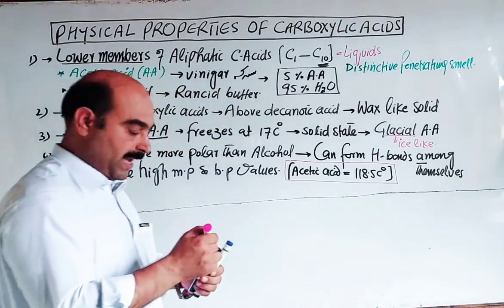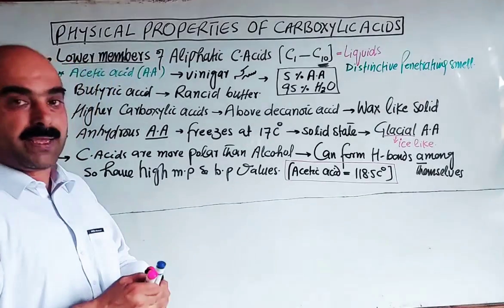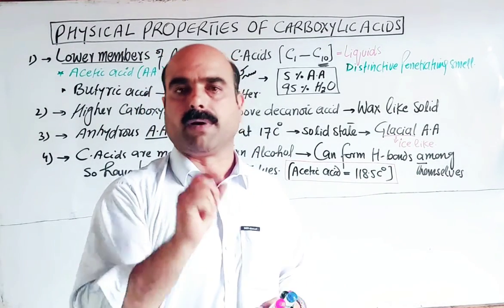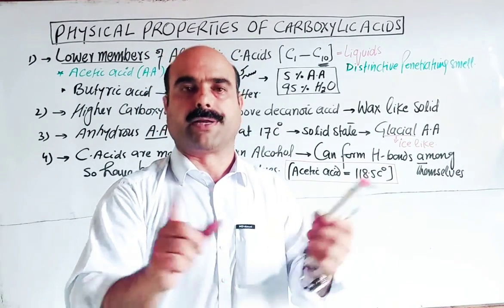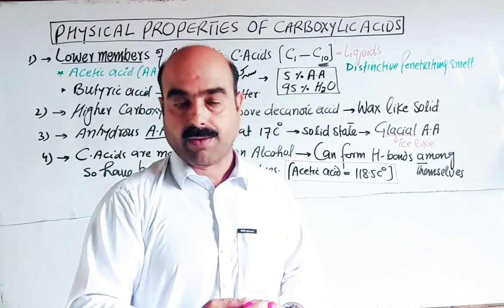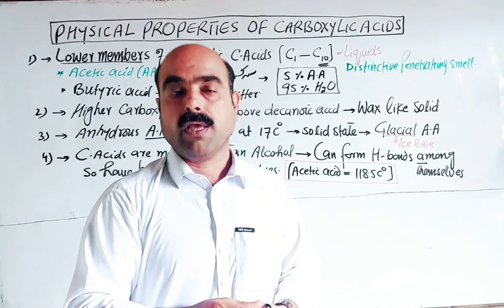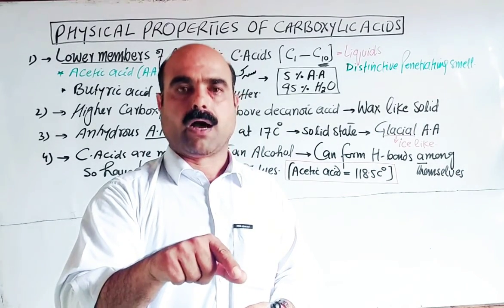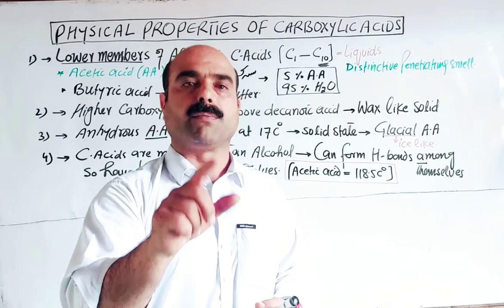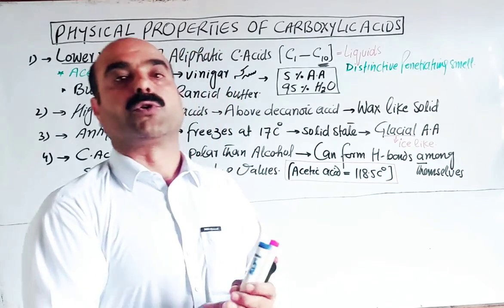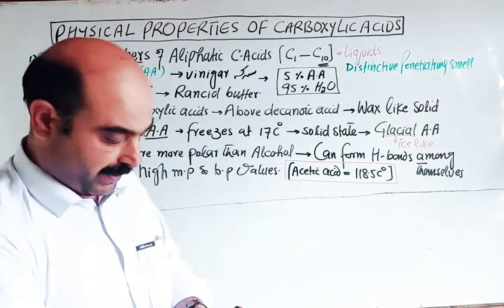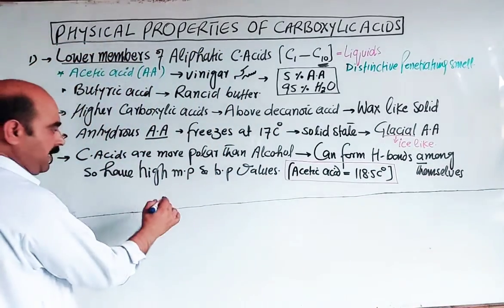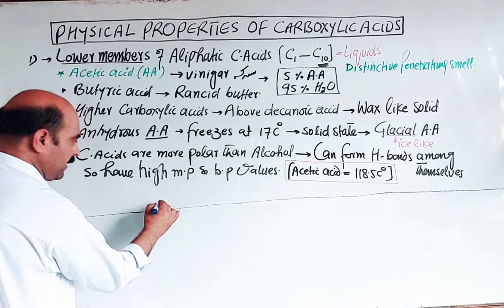Carboxylic acid molecules form dimers through hydrogen bonding. Single, separate molecules are called monomers. If two monomers are combined via hydrogen bonding, they form a dimer. If many are combined, they form polymers. Let us take an example of this dimer formation.